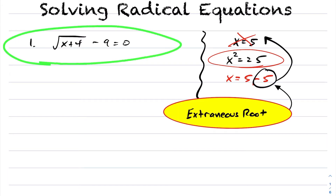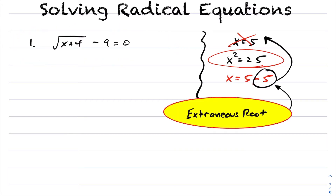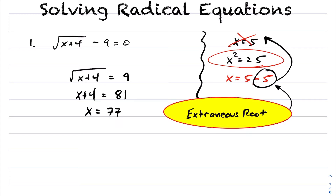So now let's focus our attention on number 1. I'm going to solve this radical equation. The technique is to isolate the radical — in this case, we're going to isolate the square root of x plus 4. After isolating the square root of x plus 4, we now square both sides. Solving for x, we get x equals 77.